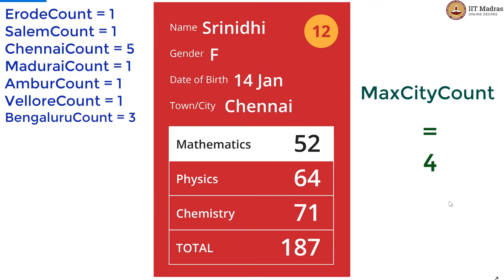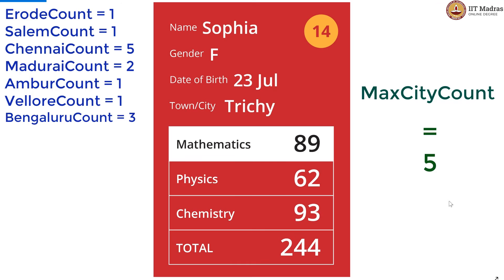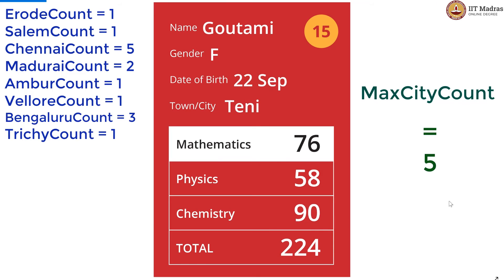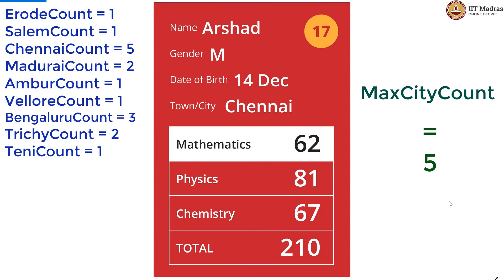Chennai again, so now Chennai count is 5. Therefore, max city count also has to change to 5. Madurai is now at 2. Trichy is new, so declare Trichy count as a variable, initialize it to 0, increment by 1. Same with Teni, it is new, so Teni count is initialized to 0 and incremented by 1. Trichy again, so we now have Trichy count at 2. And now we are at Chennai again — Chennai is now at 6 students, and that means our max city count also has to be updated to 6.